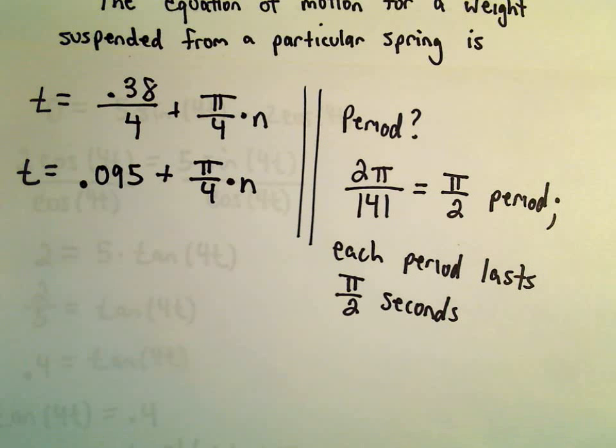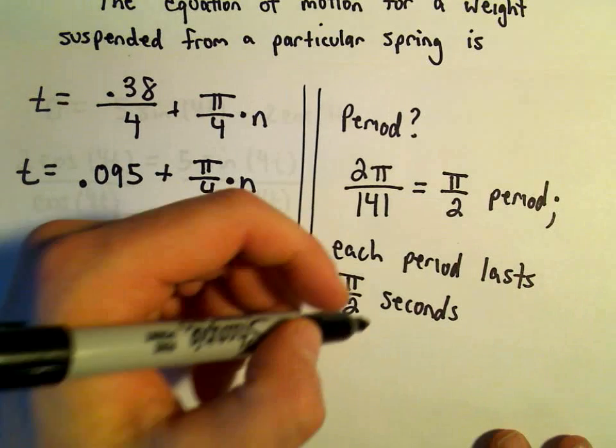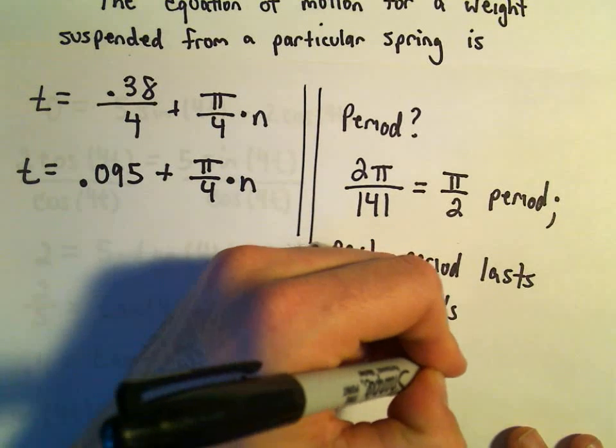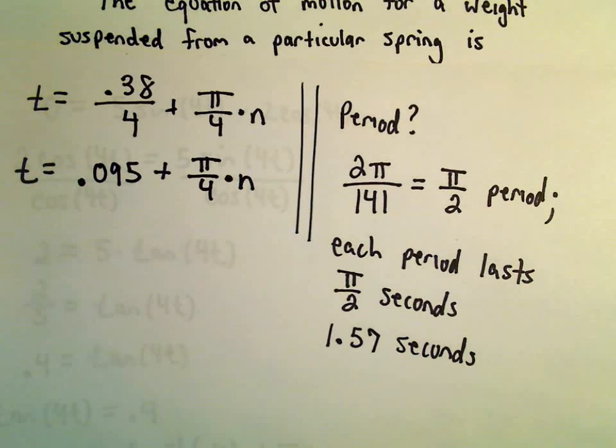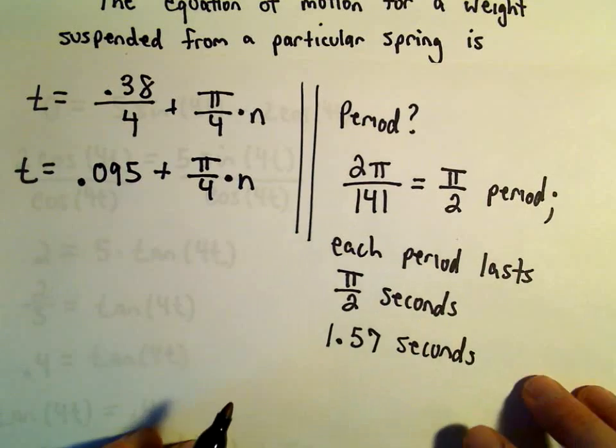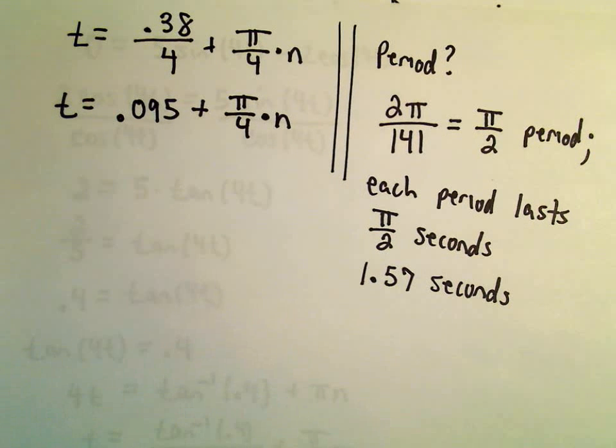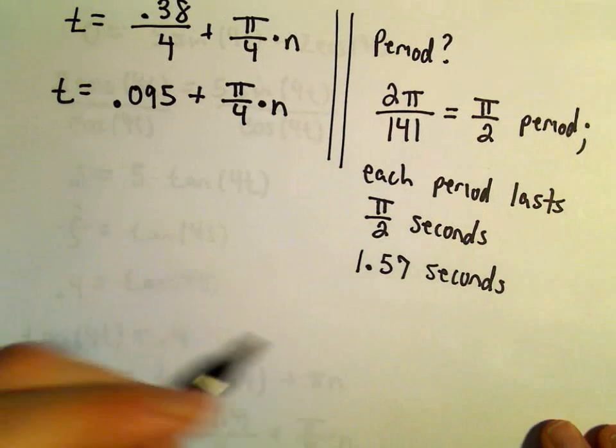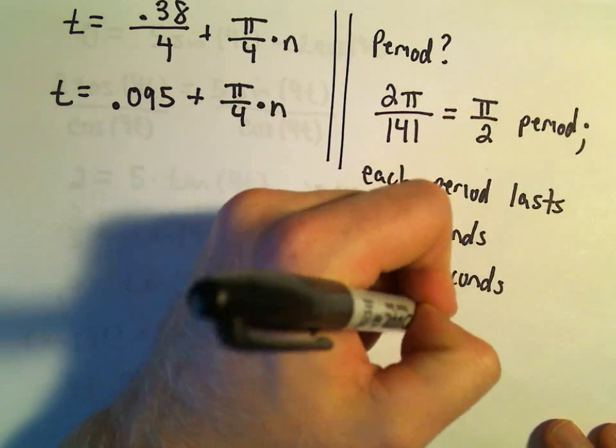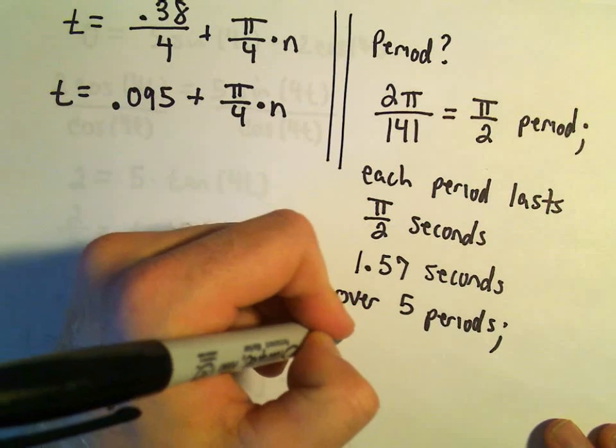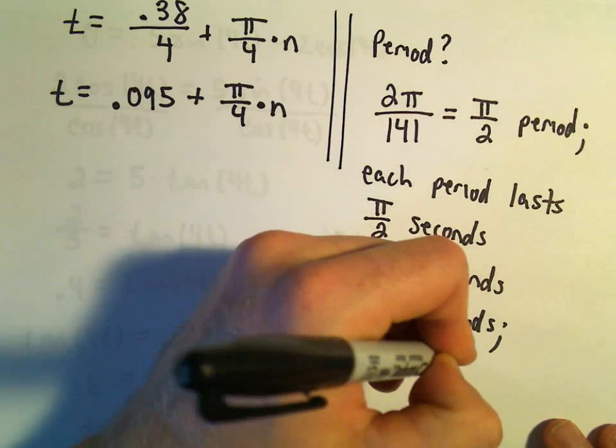That really says each period lasts pi over 2 seconds. Let's try to get a better feel for that. Pi divided by 2, that's going to be roughly equal to 1.57 seconds. So each period lasts 1.57 seconds. Well, I think we were going to do this over 5 periods. So if we multiply this by 5, 1.57 times 5, over 5 periods it's going to go from 0 up to 7.85 seconds.